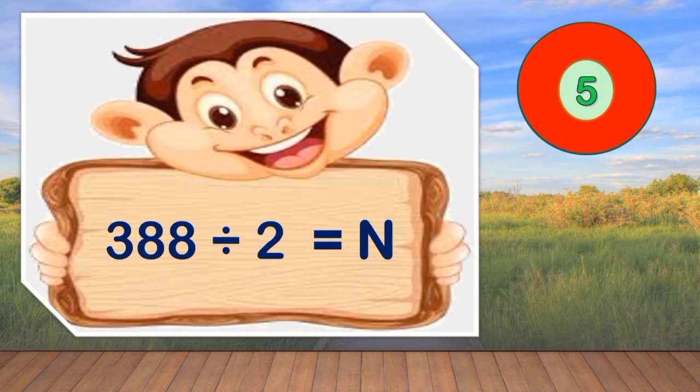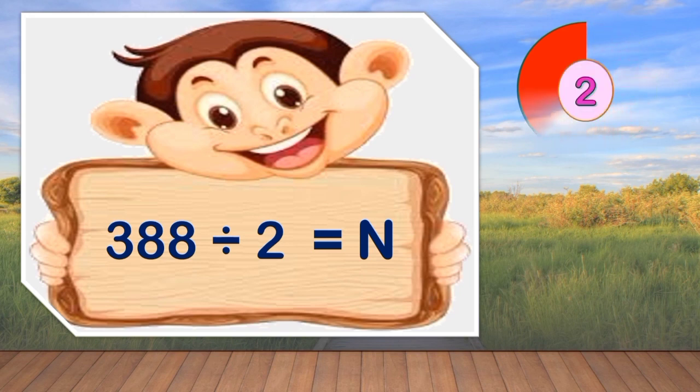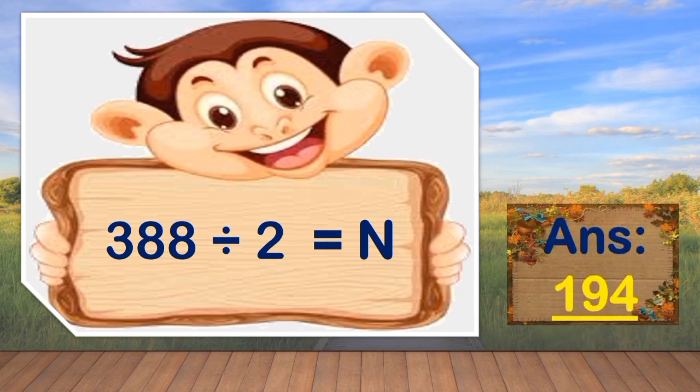Number 4. 388 divided by 2 is equal to N. You are given 5 seconds to answer this. Go! Time is up. And what is your answer, children? Very good! It's 194.